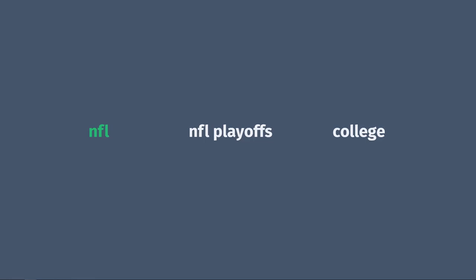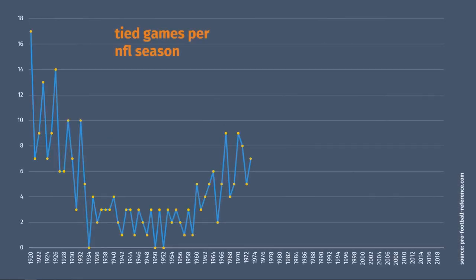Let's start with the pros. For a long time, there was no overtime and games ended in ties a lot. From 1970 to 73, there were 29 ties in the NFL.